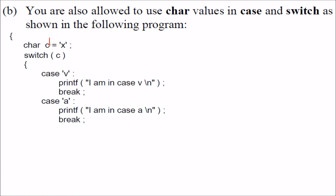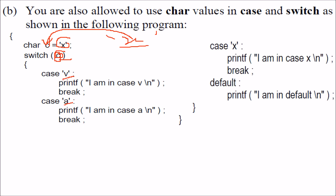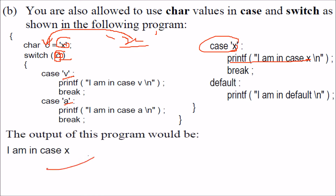You can also use a character value in switch. By virtue of characters being ASCII representations understood by the computer, a character is essentially treated as an integer. There is a restriction that the switch value can only be an integer expression, but a character in single quotes — like 'X' — gives its ASCII value. This ASCII value is compared with the ASCII values of the cases, and since X matches case X, that line is printed: 'I am in case X'.